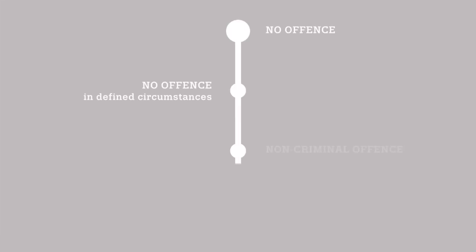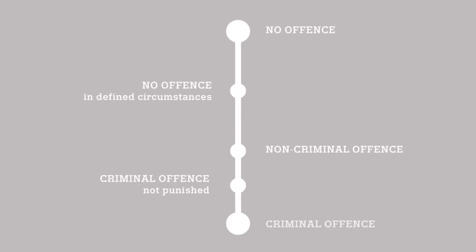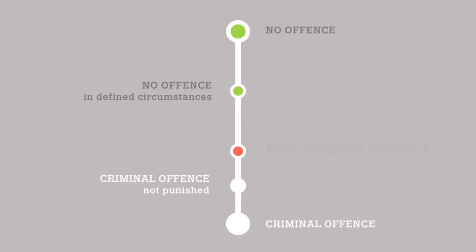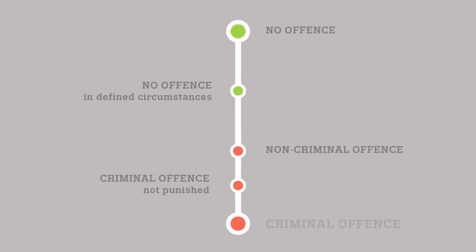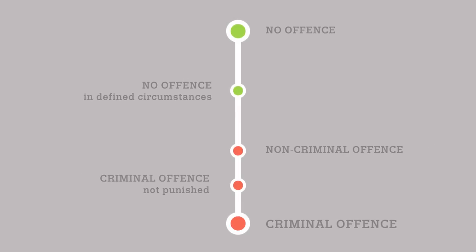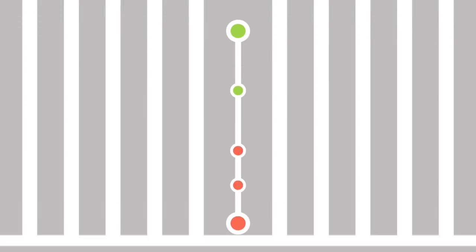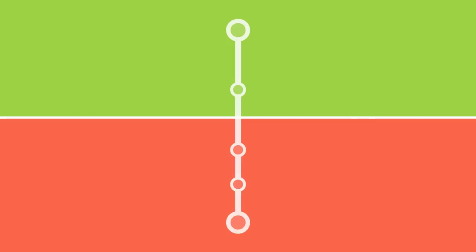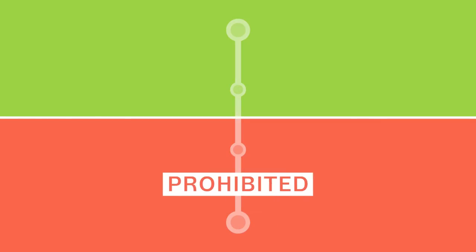Let's start by considering that there are different possible levels of offences. They range from no offence, all the way to a criminal offence, which is usually punished. These levels of offences may be separated into behaviours that are usually prohibited and behaviours that are usually permitted.